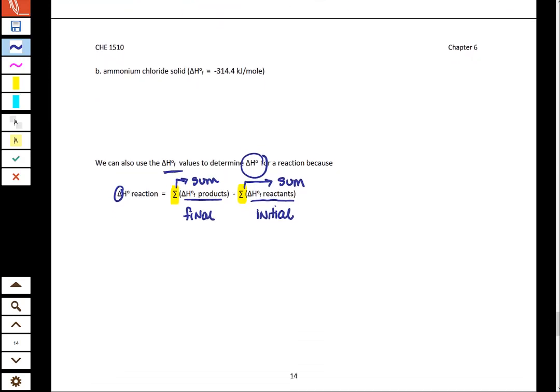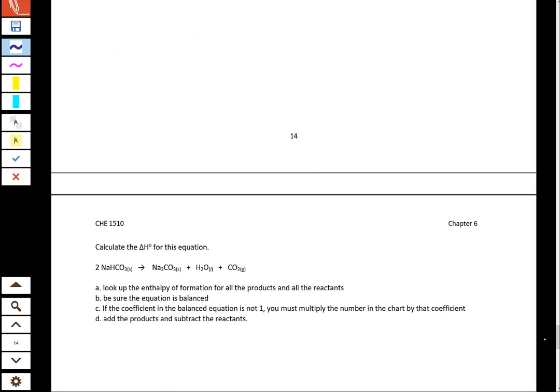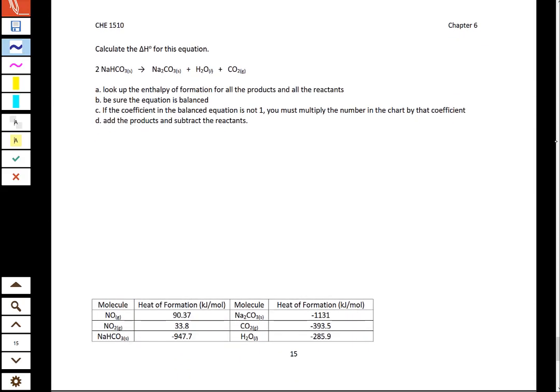Let's look at what a problem might look like. Here, we're given a chemical equation, and we want to calculate the delta H for this equation. So, what we can do is we can look up the enthalpy of formation for all the products and all the reactants. This is going to be in a big table in the back of your book. We want to make sure that equation is balanced, and if we have some coefficient that's not one, we're going to have to utilize that in our equation that we're about to use.